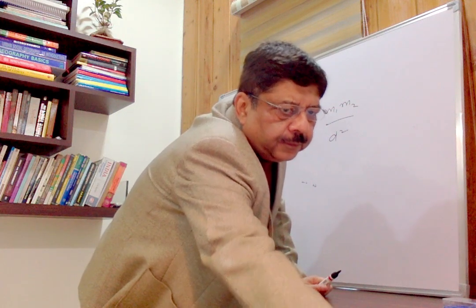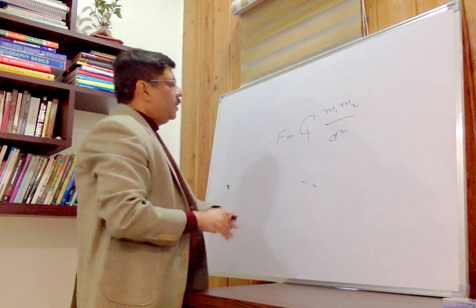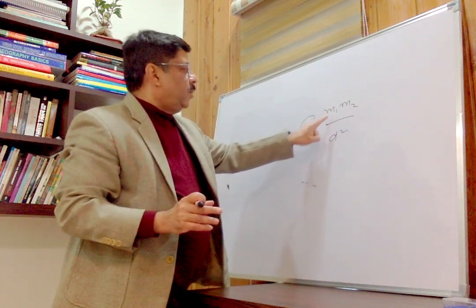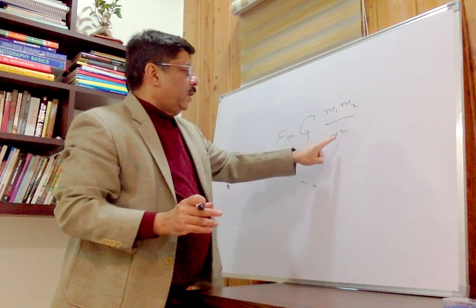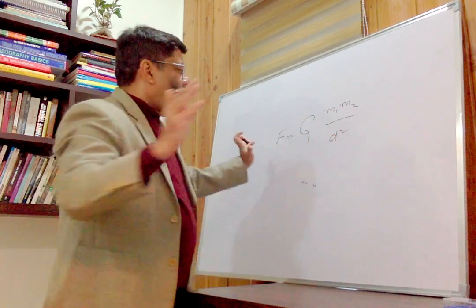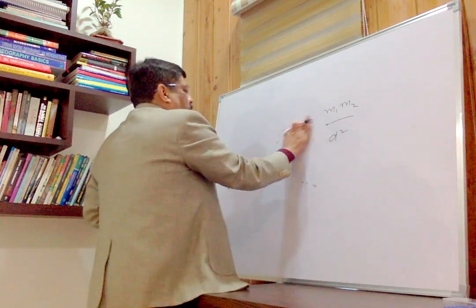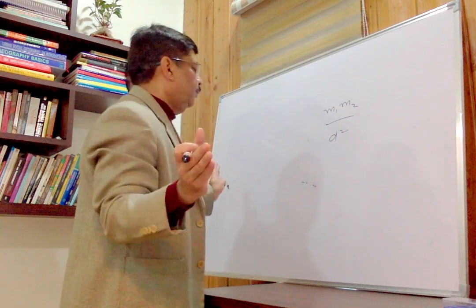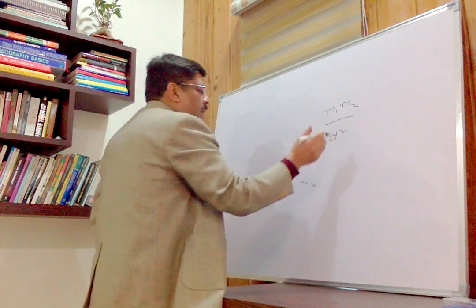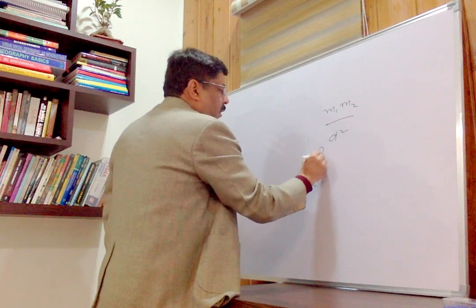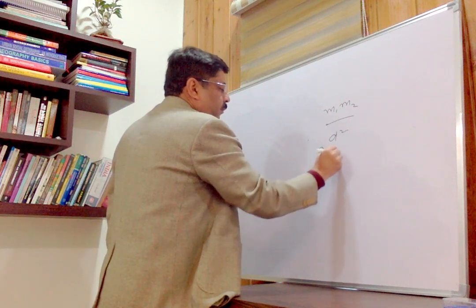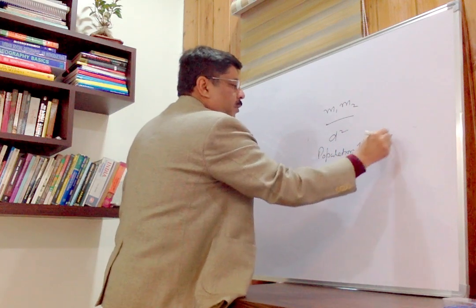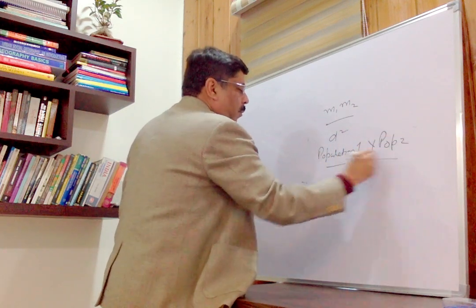The gravity model of migration is almost similar to this formula. Here, M1 is the mass of one object, M2 the second object, and D is the distance squared. We have replaced population 1 and population 2 in place of the masses, divided by D squared. The bond of the relationship of migration represents the strength of migration.